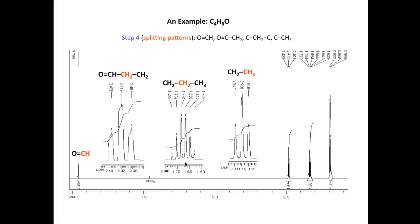This next signal up here, around or near 1.7, contains six lines. And so this is a sextet, and that's consistent with the CH2 being split by five neighbouring hydrogen atoms on adjacent carbons. Namely, this CH2 here and this CH3. So those five neighbouring hydrogen atoms split the signal for this CH2 into six lines.